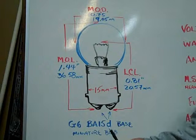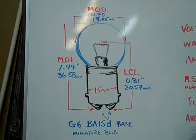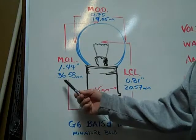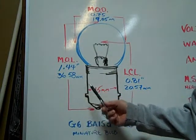The G6BA15D base miniature bulb has a maximum overall length of 1.44 inches or 36.58 millimeters.